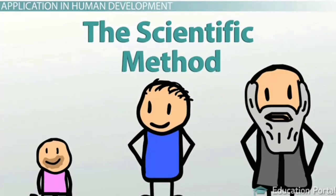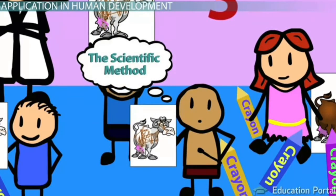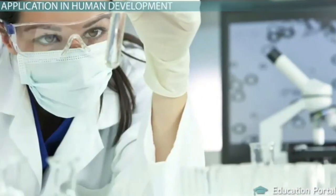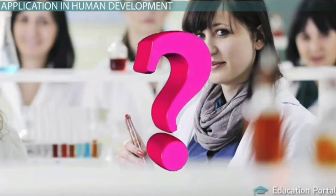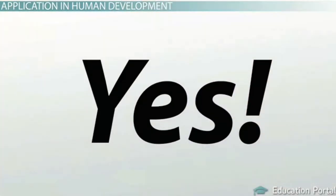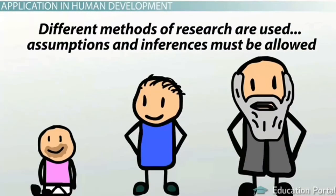You've been hearing about the scientific method from as early as elementary school. However, most of your past experience with the process was probably not associated with the social sciences. Because of this, when you first heard the scientific method mentioned, you probably pictured a laboratory experiment involving chemicals or measuring the growth of plants in a controlled experiment. The answer is that the major elements of the scientific method are shared by both the social sciences and other types of science. The only major difference is that in the social sciences, such as the study of human growth and development, different methods of research are used more often.